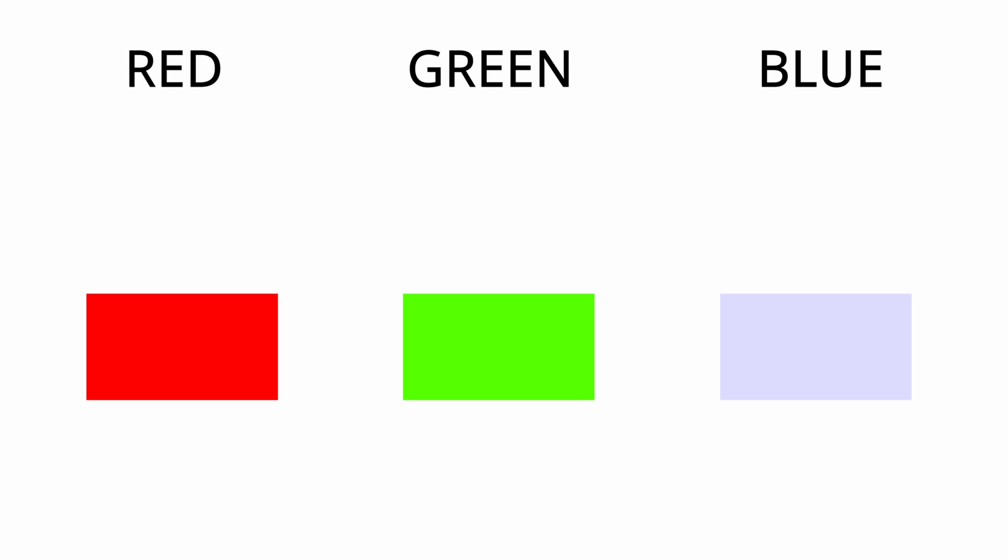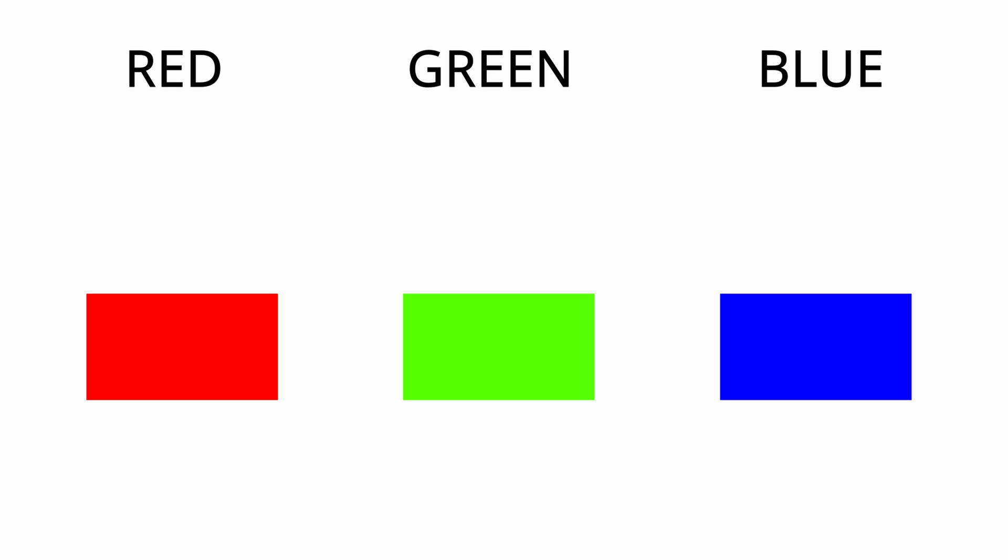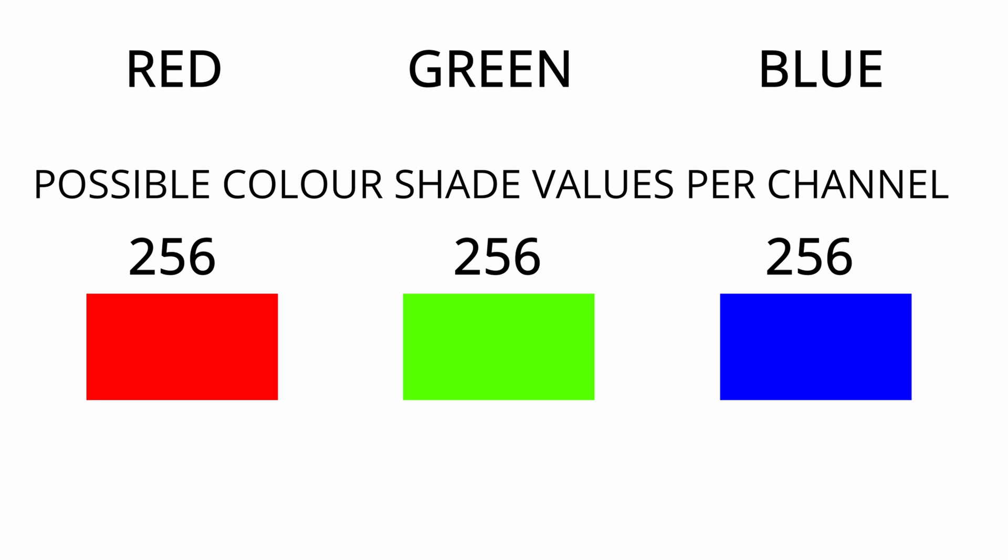So what is 8-bit colour? With 8-bit versus 10-bit as we're discussing here, with 8-bit you've got reds, greens and blues — your RGBs. With each of those you have a certain number associated with the possible colour shade values per channel. So each channel — red, green and blue — has a possible colour shade value of 256.